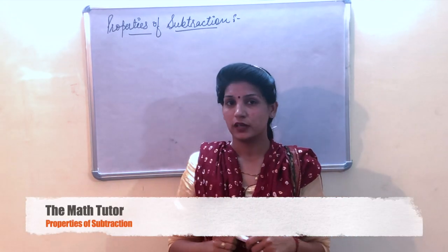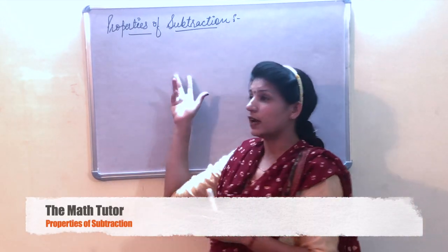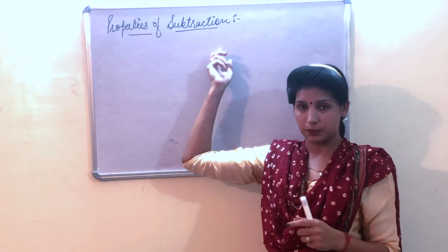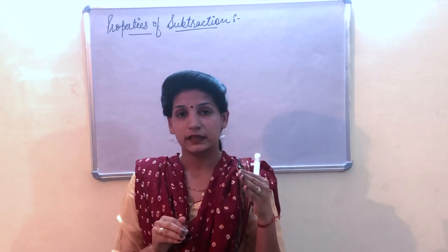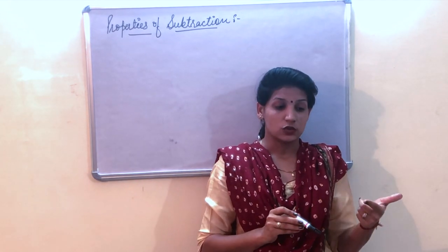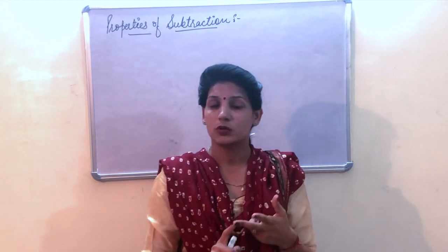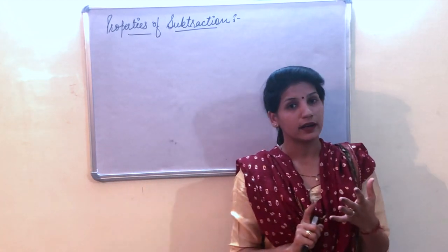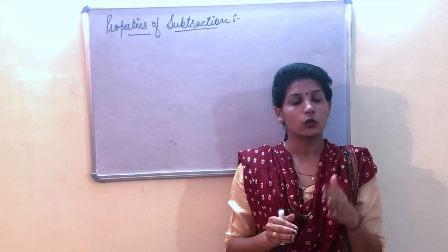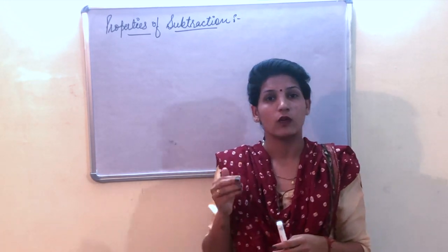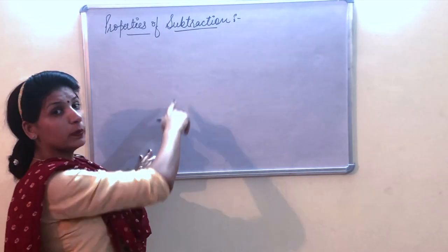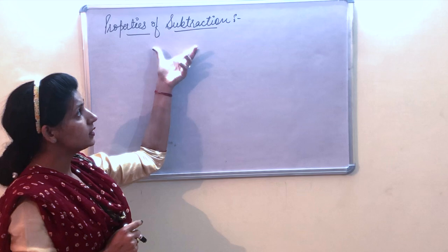Good morning everyone. Today we will cover our last property for whole numbers, that is the properties of subtraction. As you know, there are some common properties for our operations that we discussed earlier: closure property, commutative, associative, and identity property. But it is not necessary that these four properties are valid for every operation.